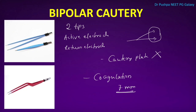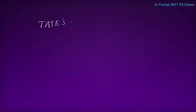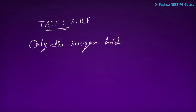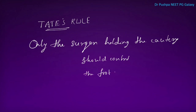In monopolar cautery, there is a single end acting as the active electrode, and the ground plate acts as the return electrode — the patient is part of the circuit. In bipolar cautery, there are two tips: one as the active electrode and another as the return electrode, forming a circuit between those two tips. There is something called Stade's rule: only the surgeon holding the cautery should control the foot pedal.